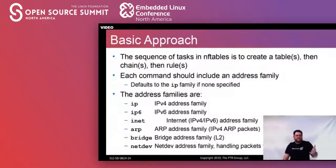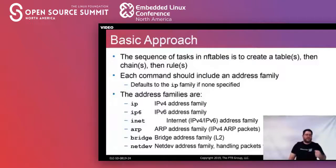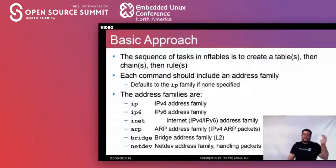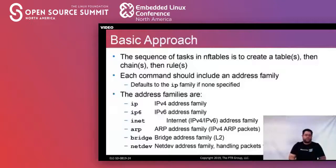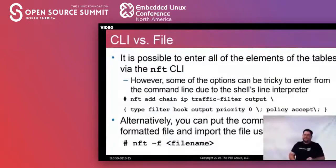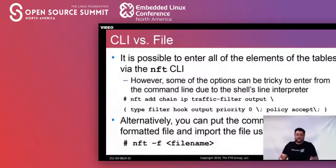The sequence of tasks in NF tables is to create a table, then a chain, then a rule — exactly the same way you would do this with IP tables or IP6 tables. The address families you're going to want to worry about are: IP (which is IPv4), IPv6, INET (both IPv4 and IPv6 combined), ARP, bridge, and netdev. Another really nice thing NF tables brings is that you can not only use the command line interface, but you can also save all of this information into a file and then replay that back into NF tables. If you do 'nft list ruleset', you can literally just copy and paste what it outputs, put it in a file, and on the next time you load your system, you can reload that straight in — it's literally giving you the config file it will accept.